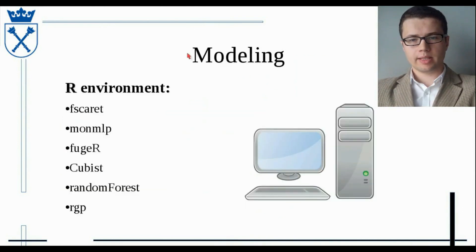In the modeling stage, we used R environment with additional packages listed below. Caret was used for feature selection, and we created various types of models like Artificial Neural Networks with the monmlp package, fuzzy systems with FuzzyR package, rule-based systems with Cubist and randomForest packages, and we also created mathematical equations with genetic programming method and RGP package.